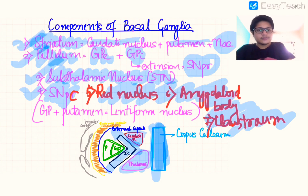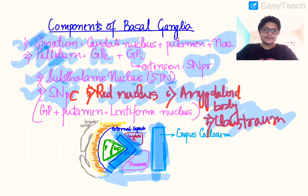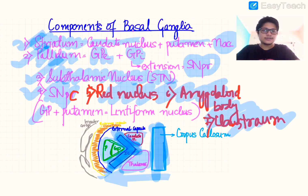Going from medial to lateral, this is the internal capsule — here is the anterior limb, this is the genu, this is the posterior limb, this is the retrolentiform part, and below there is the sublentiform part. This triangular structure we call the lentiform nucleus; it is the combination of globus pallidus and putamen — globus pallidus is located medially and putamen laterally.